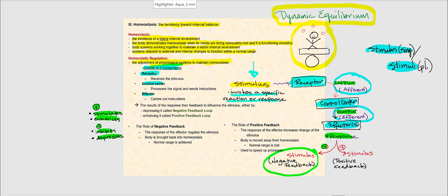For example, if the stimulus is high body temperature, through negative feedback it negates and counteracts it — we drop the body temperature. If we have low body temperature as the stimulus, through negative feedback the idea is to increase that body temperature. With negative feedback, the response of the effector negates the stimulus. If something is too high, we bring it back down; if something is too low, we bring it back up. The body is brought back to homeostasis — normal range is achieved.